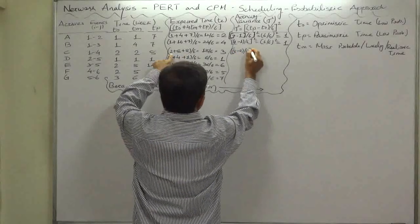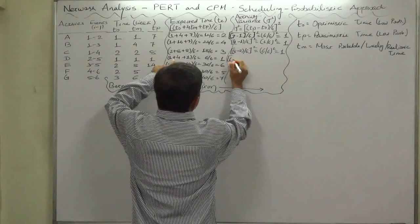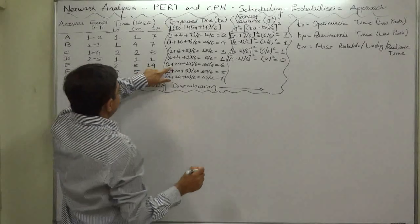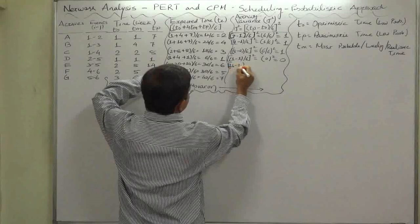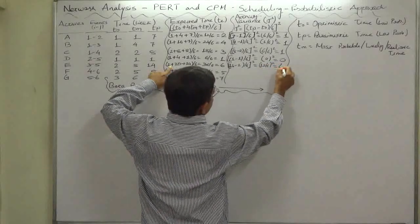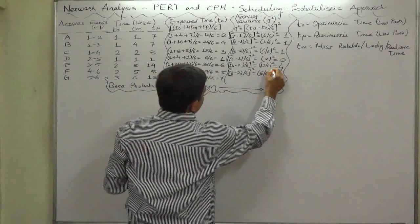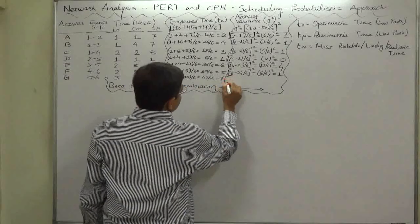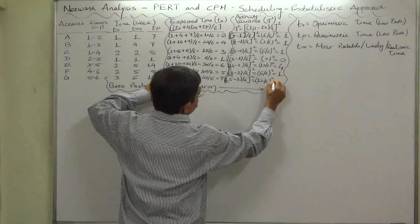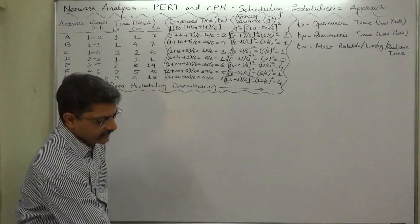For another activity: (8 − 2) / 6 squared = 0. For activity E: (14 − 2) / 6 squared = (12/6) squared = 2 squared = 4. So we have now calculated the expected time — the weighted average of optimistic, pessimistic, and most likely times with weights of 1, 1, and 4 respectively — as well as the variance for each activity.